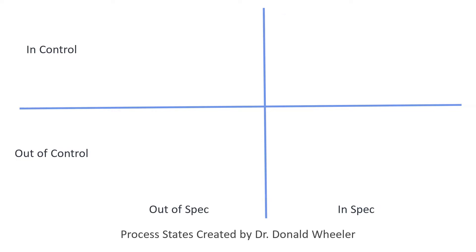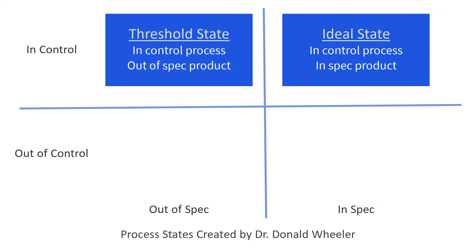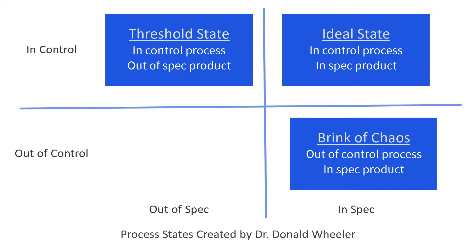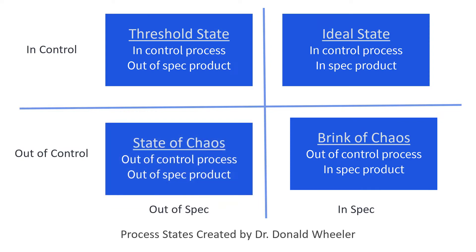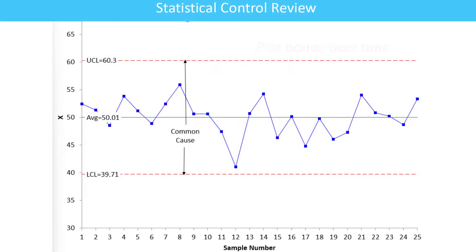Now we're going to have our four quadrants, which define our process states. In the ideal state, the process is in control and our product is within specifications. In the threshold state, the process is still in control but we're making product that's out of spec. Then we have the brink of chaos, where we have an out-of-control process although the product is within specifications. And then we move to the state of chaos — out-of-control process and out-of-spec product, and you have no idea what's going on in your process.